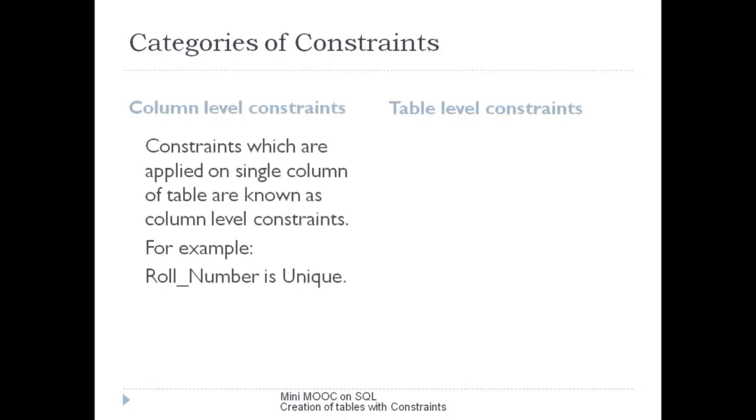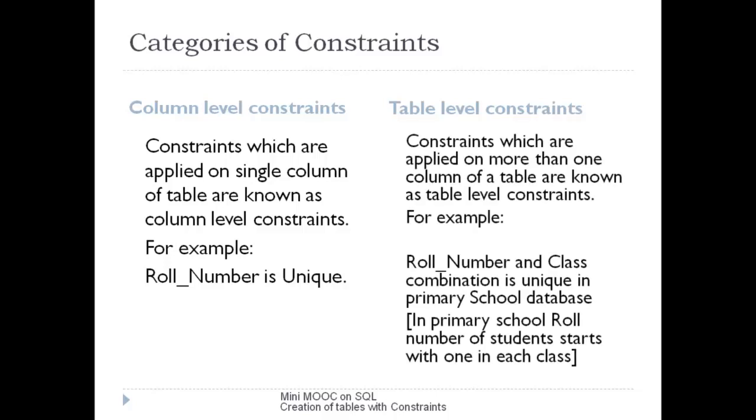data is stored in the database are known as integrity rules or constraints. There are two categories of constraints: column level and table level. If a constraint is applied on a single column of a table—for example, roll number is unique—then it is a column level constraint. If a constraint is applied on